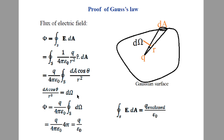So dA cosθ / R² = dΩ. We can write the flux φ = Q / 4πε₀ · ∮ dΩ. The closed surface integral of dΩ equals 4π, because for any closed surface the total solid angle around a point is 4π — similar to how in two dimensions the total plane angle around a point is 360° or 2π radians. Therefore φ = Q / 4πε₀ · 4π = Q / ε₀.